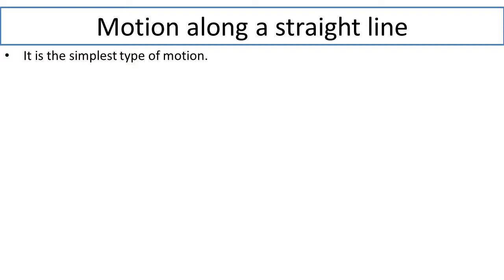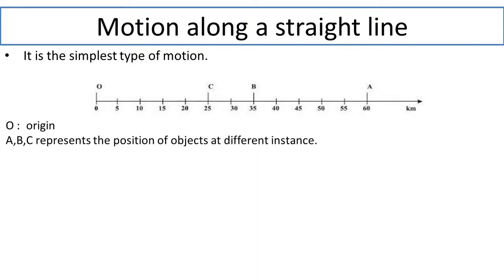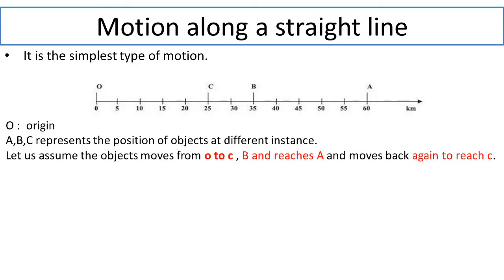If we consider a scale, the starting point is O, and then different points are C, B, and A, with the x-axis parameter in kilometers, from zero to 60 kilometers. The reference point O is our origin. Points A, B, C represent the positions of objects. We assume the object moves from O to C, to B, and then reaches A.